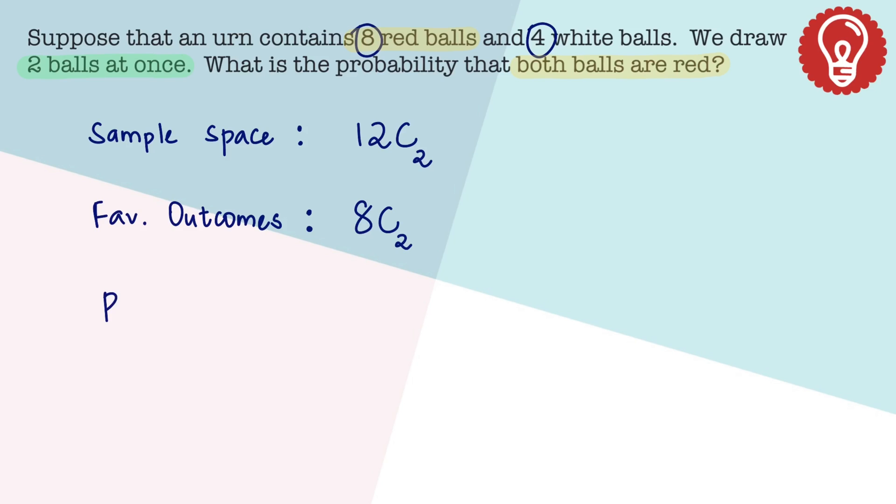Therefore, the probability is favorable outcomes by sample space. On expanding 8C2 and 12C2, we can strike off the two. And this is four twos, four threes. So we are left out with 14 by 33. And that is the answer.